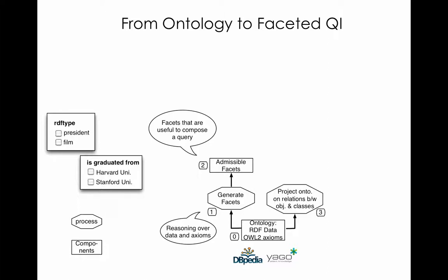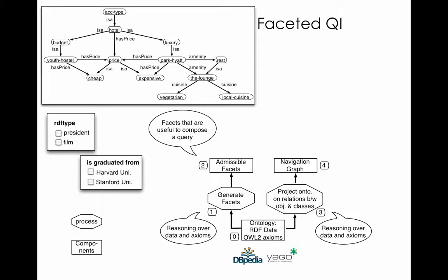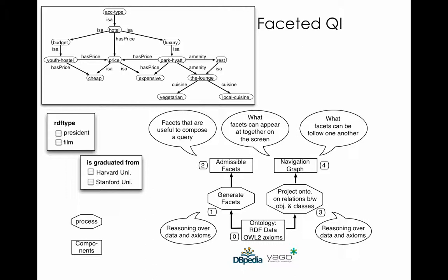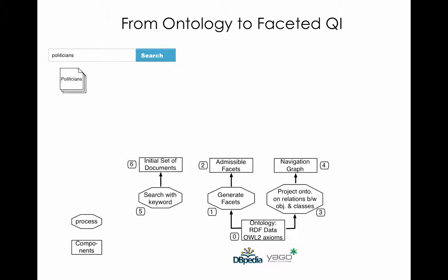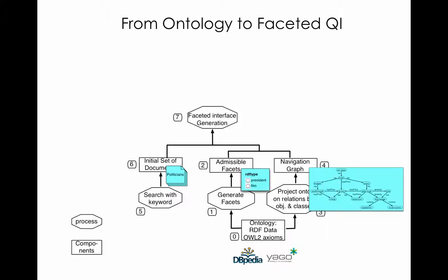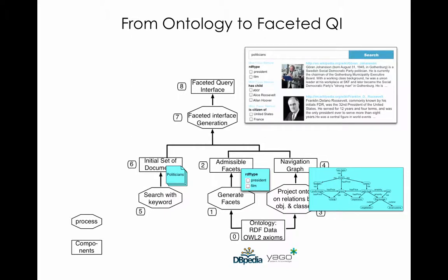Next, we project the ontology on relationships between objects and classes. This is again done via logical reasoning. The result of this process is what we call a navigation graph. The graph encodes what facets can occur together on the screen as well as what facets can follow one another in a nested fashion. Admissible facets and the navigation graph are what we automatically extract from the ontology. The next process in faceted interface generation is keyword-based search, which returns a set of initial documents — in our example, relevant to 'politicians'. Now we have all the components needed to generate a faceted query interface: the set of initial documents, admissible facets, and navigation graph. From them, we can generate the interface. Note that this interface is what the users see before they do any selections in facets.